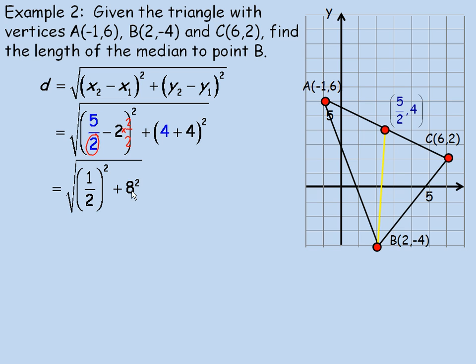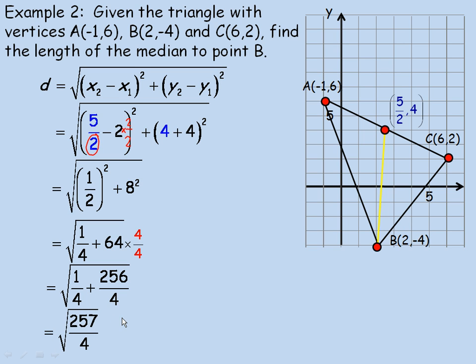4 plus 4 is 8. So we have 8 squared here. A half squared is a quarter. 1 squared is 1. And 2 squared is 4. And 8 squared is 64. In order to add these together, I need a common denominator. Right now, the 64 has the denominator of 1 that we don't see. So we multiply that by 4 over 4. So underneath the square root sign, we have a quarter plus 64 times 4 is 256 over 4. So that would add to 257 over 4.